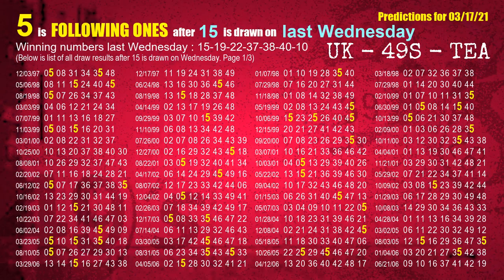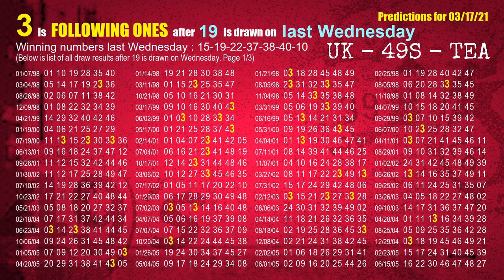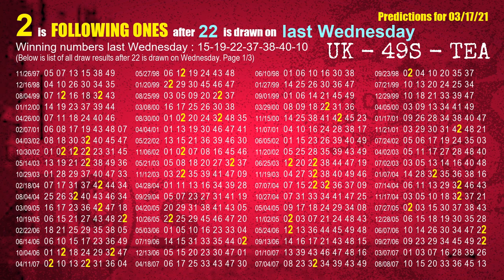After calculating following ones with today's result, we will find out following ones through the result of the same day last week. The first winning number last Wednesday is 15. We list all draw results which are one week after a Wednesday draw with 15 as a winning number. The most frequently following units digit is 5 when 15 is the winning number on last Wednesday. We also highlight the units digit 5 in yellow for you. The second winning number last Wednesday is 19. The most frequently following units digit is 3 when 19 is the winning number on last Wednesday. The third winning number last Wednesday is 22. The most frequently following units digit is 3 when 22 is the winning number on last Wednesday.